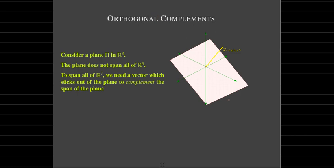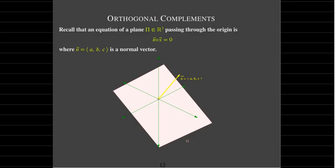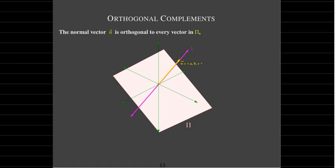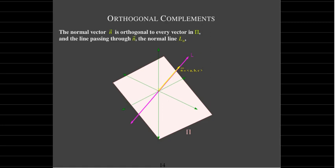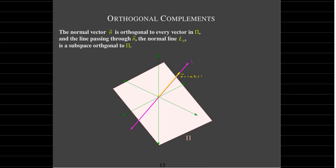A vector which is not in the plane and is orthogonal to the plane would be the normal vector. We know that the equation is just the normal vector dotted with (x, y, z) equaling 0. To emphasize again, the normal vector is orthogonal to any vector in the plane pi. And the normal line — the line that passes through the normal vector and through the origin — is a subspace, and it's orthogonal to pi.